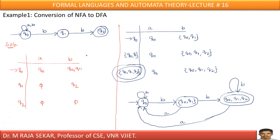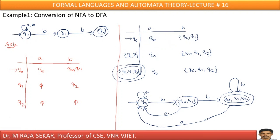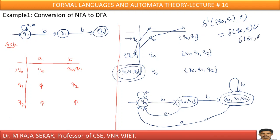After this, I must find transitions for Q0 as well as Q0Q1. Q0 is already discussed. Now I must copy Q0Q1 here as a single state — not two states. I am considering that one as a single state. Again, I must find Q0Q1 on A and Q0Q1 on B. Delta dash of Q0Q1 on A — according to the formula — is delta of Q0 on A union delta of Q1 on A. Delta of Q0 on A is Q0; delta of Q1 on A is empty. Q0 union empty gives Q0.